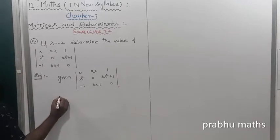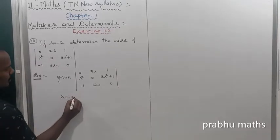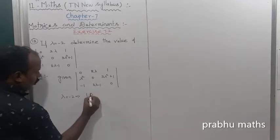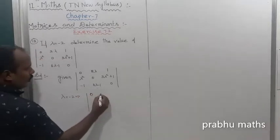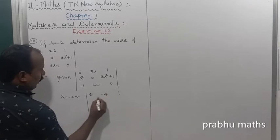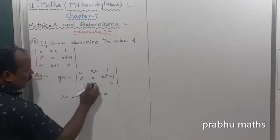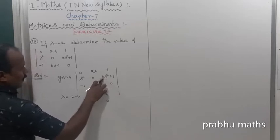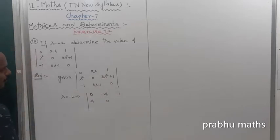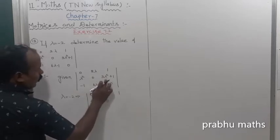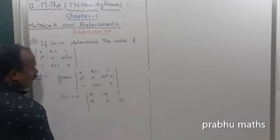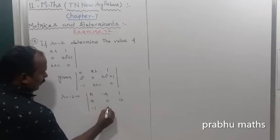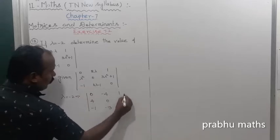So, given that lambda is equal to minus 2, which implies that the determinant entries become: the first entry is 0, the second one is going to minus 4, then 1, then 4; next one 0; next one 3 times 4, so this one is 12, giving 13; next one minus 1, minus 1 minus 13; next one is going to 0.